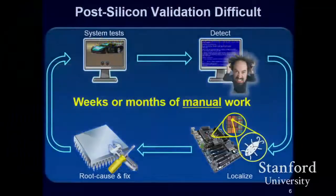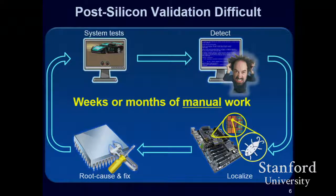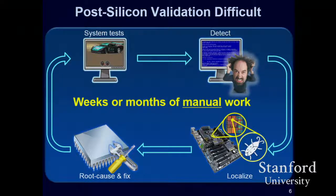What does the industry do today? When chips come back from the foundry, you plug into the system. I literally know of companies that play games on these systems because games sometimes expose bugs you wouldn't otherwise find. If you are lucky, you're going to see the blue screen of death. If you are not lucky, your customers are going to see that. Consider sitting in front of that blue screen, trying to find which one of the billions of transistors caused a little error in which of the trillions of cycles. It takes weeks or months of manual work per bug — that's crazy.